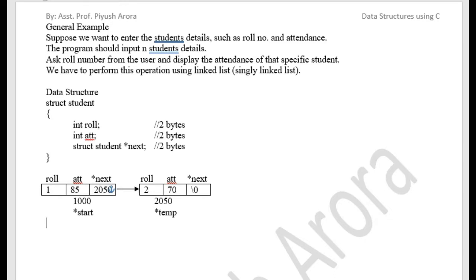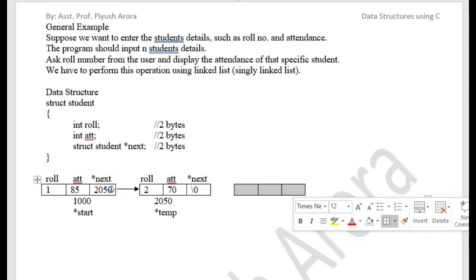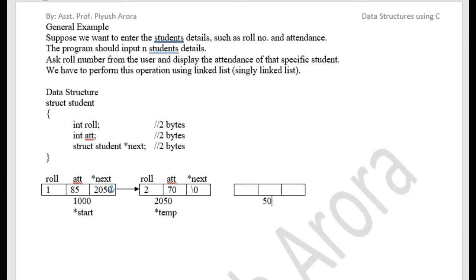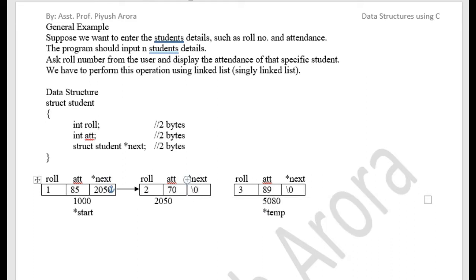After this connection, you continuously input many more students' details. Suppose we need to create the next node — we create a new node. This node also has some address, for example 5080, and its name is temp. The three parts are: role number, attendance, and star next. For example, role number is 3, attendance is 89, and the next pointer initially has null. Now this is the last node. The last node is identified by having null in its next field.